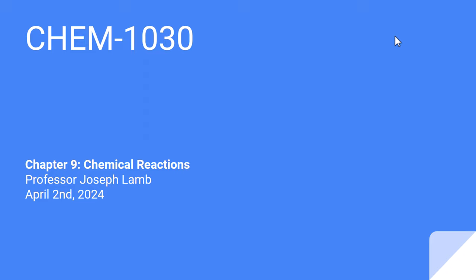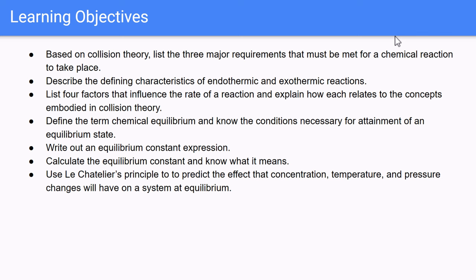This will take us through the rest of chapter nine, and then hopefully we finish chapter ten very soon. We're going to look at chemical kinetics — understanding collision theory and the requirements that must be met for a chemical reaction to take place. We'll define characteristics of endothermic and exothermic processes, list four factors that influence the rate of a reaction, define chemical equilibrium and the conditions necessary to obtain an equilibrium state. We'll write equilibrium constant expressions, calculate equilibrium constants, and use Le Chatelier's principle to predict the effects of concentration, temperature, and pressure changes on a system at equilibrium.